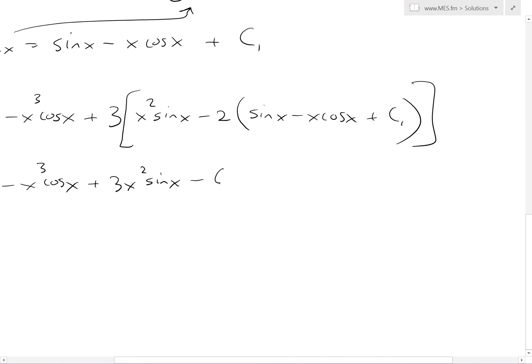So minus 6, and then multiply this inside: 6 sin(x)—that's a negative, so it becomes positive right here. Plus 6x cos(x), and then this is going to be a minus, it's going to now be minus 6 times C₁.